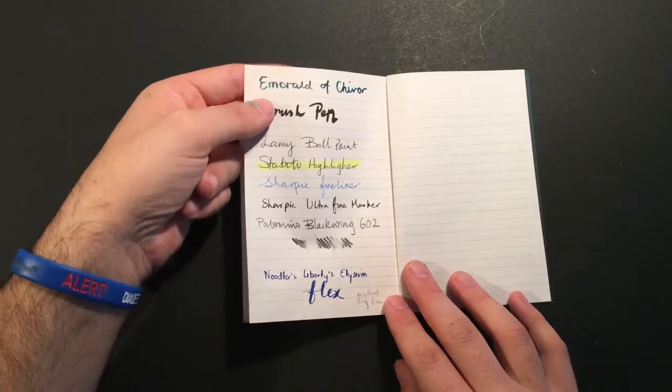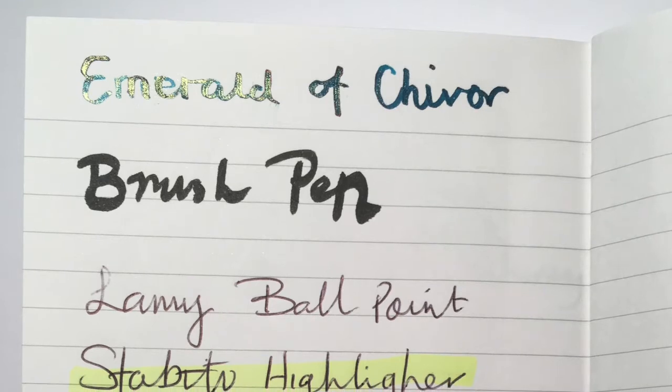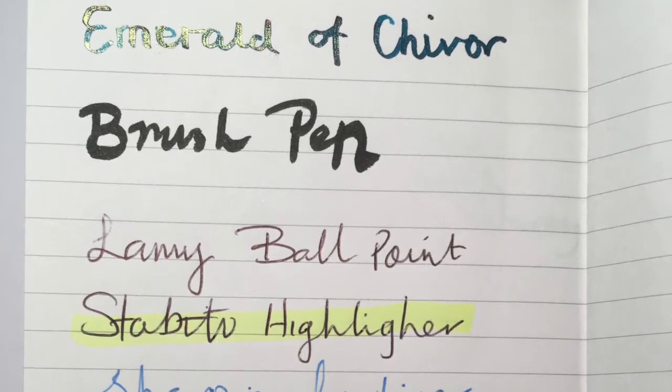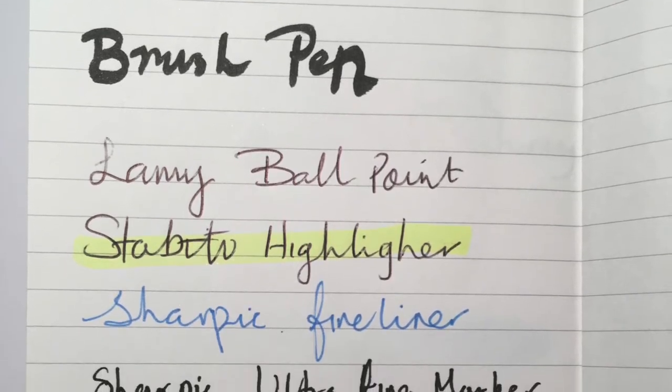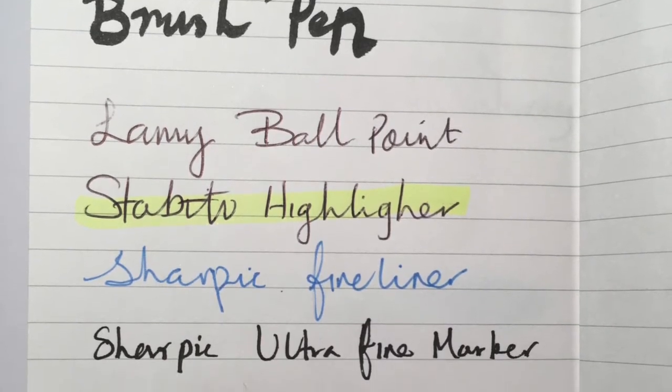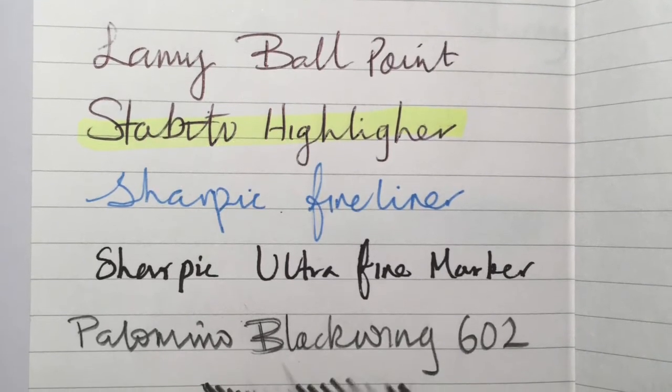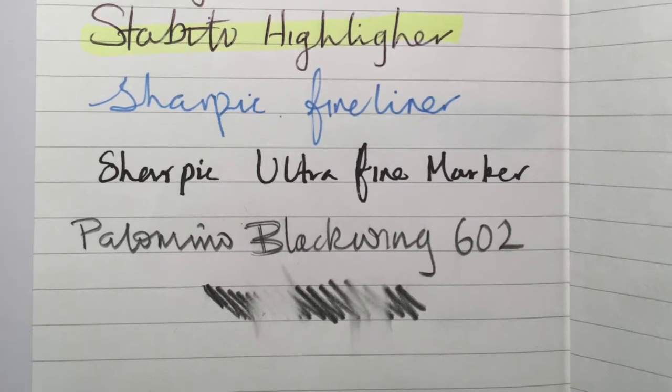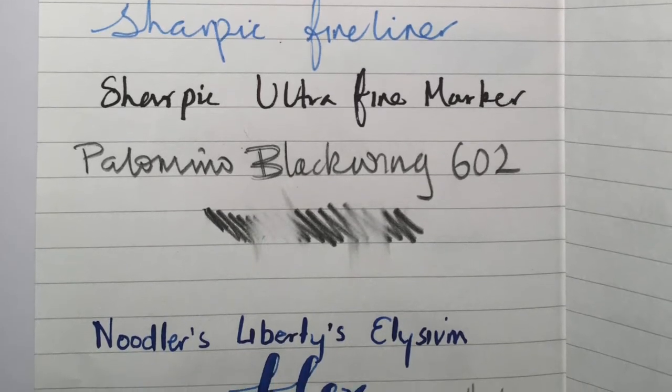Here's Emerald of Chivor with some of that lovely sparkle and sheen coming through. A brush pen with Sailor Gentle Black, a Lamy ballpoint pen with a Stabilo highlighter just to see how that works. A Sharpie fine line and a Sharpie ultra fine marker. Palomino Blackwing 602 pencil, and as you can see it rubs out relatively nicely without too much effort. And then I put some Noodler's Liberty's Elysium, which is a bit of a mongrel of an ink in a lot of ways, into a flex nib just to see what would happen.